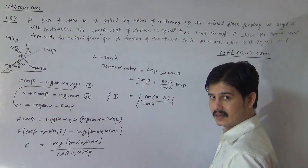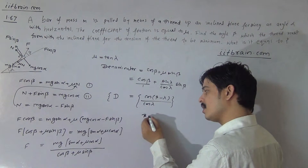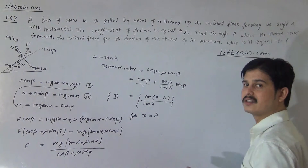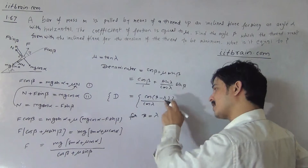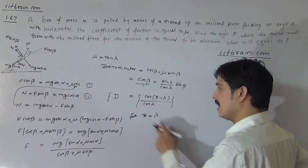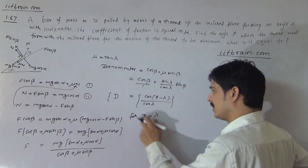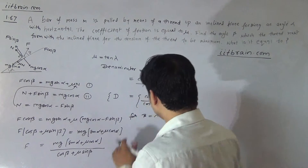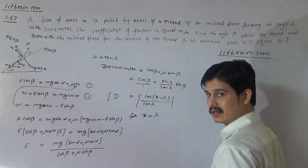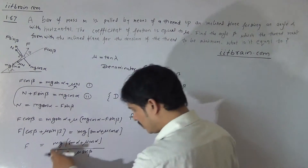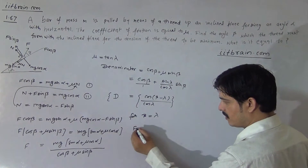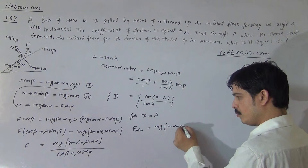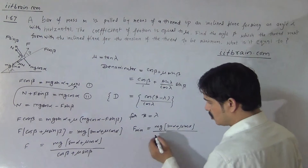Since lambda is a constant fixed value, only beta is variable. If we set beta equal to lambda, the denominator becomes cos(0 degrees) which equals 1 — the greatest possible value of the denominator. Therefore the denominator is maximum when beta equals lambda, and since F is inversely proportional to the denominator, F is minimum when beta equals lambda.